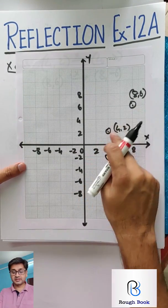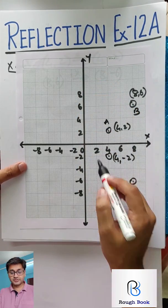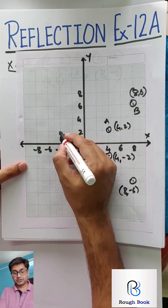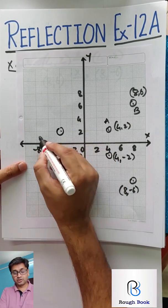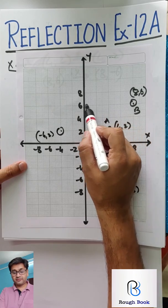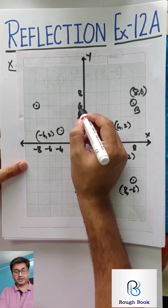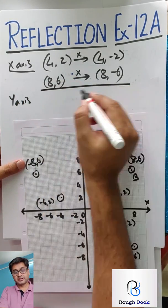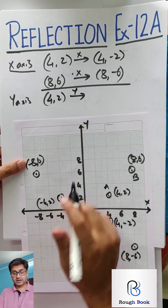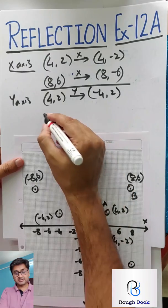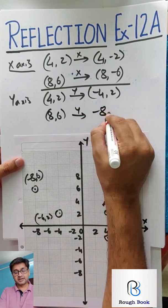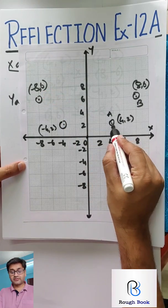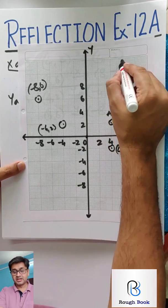If I take over here a point 8 by 6, reflecting here, that will be 8 by minus 6. Now in y-axis, what happens? So now this is the mirror. So the points will reflect on this side. The coordinates are going to be minus 4 by 2. Likewise, this is going to be the point minus 8 by 6.